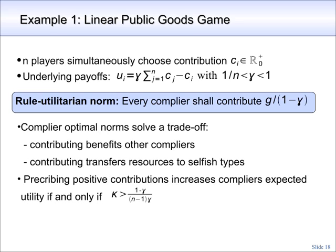Complier optimal norms solve a trade-off. On the one hand, it is good to prescribe contributions because one player contributing benefits other compliers. On the other hand, contributions are bad because they transfer resources from compliant to selfish types. It is clear that if the fraction of compliers is very small and the fraction of selfish types is very large, it cannot be optimal for compliers to make any positive contributions. It is easy to show that positive contributions increase compliers' expected utility if and only if the compliers' share is above a threshold given by 1 minus gamma divided by n minus 1 times gamma.